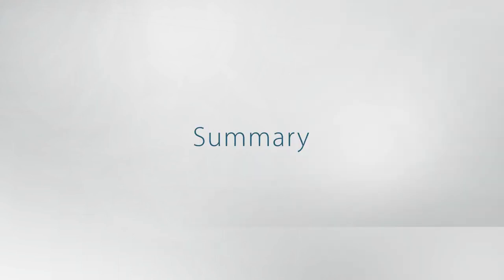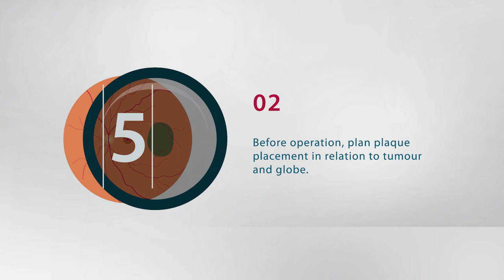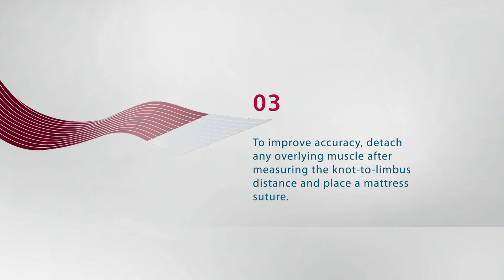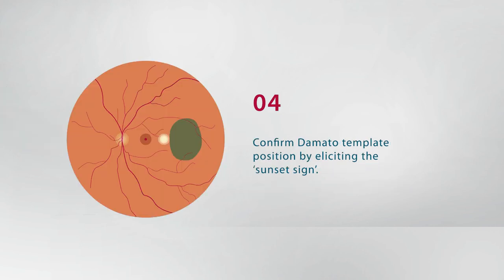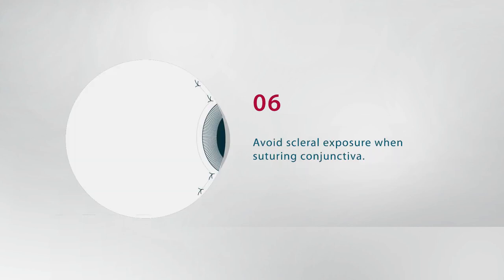In summary, the following key steps are important: Ruthenium 106 eye applicators irradiate the tumor with minimal side scatter so that accurate plaque positioning is essential. Before operation, plan plaque placement in relation to tumor and globe. To improve accuracy, detach any overlying muscle after measuring the knot to limbus distance and place a mattress suture. Confirm D'Amato template position by eliciting the sunset sign. Alternatively, confirm plaque position by ultrasonography or indentation. Avoid scleral exposure when suturing conjunctiva.